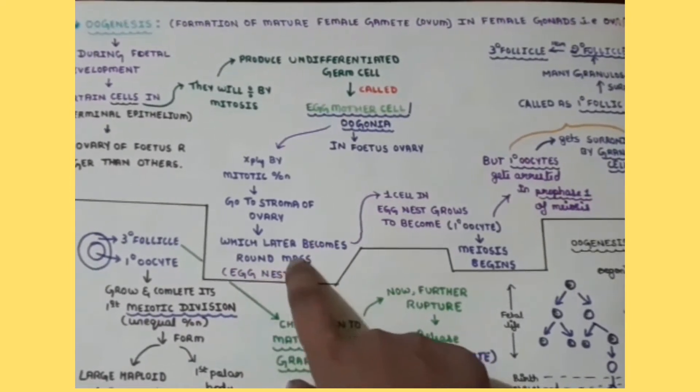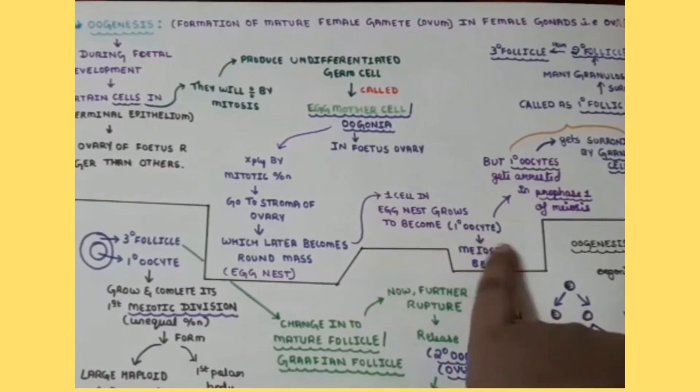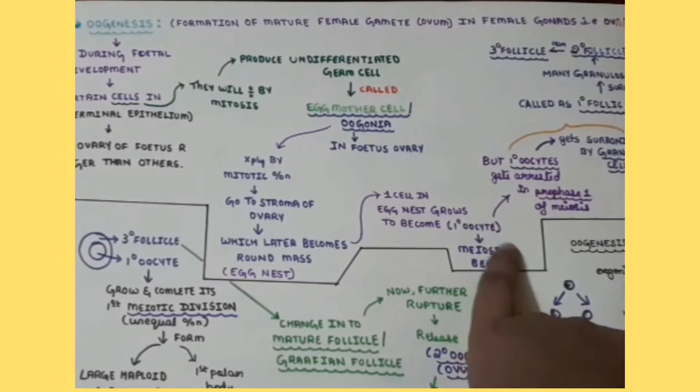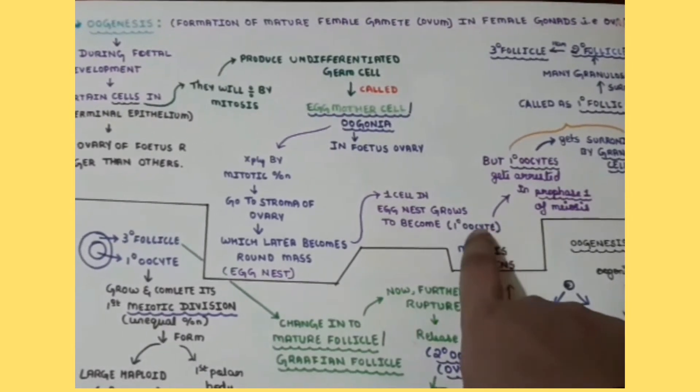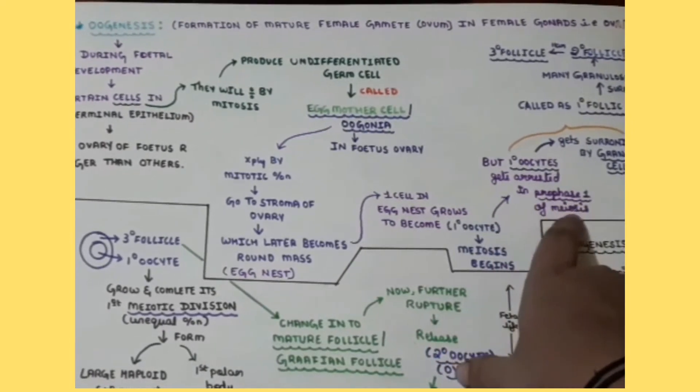Inside this egg nest, the one cell will grow to become primary oocytes. So this primary oocyte will undergo meiosis division. While it is undergoing meiosis division, it has been arrested in the prophase one of the meiosis.